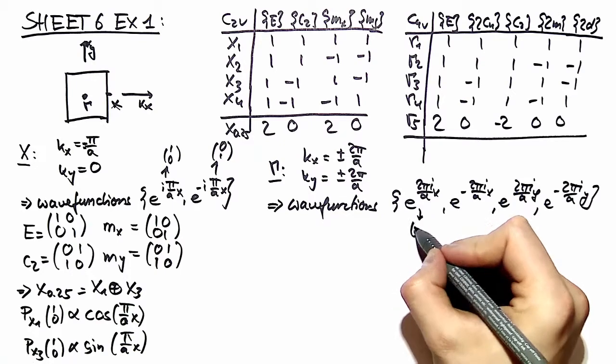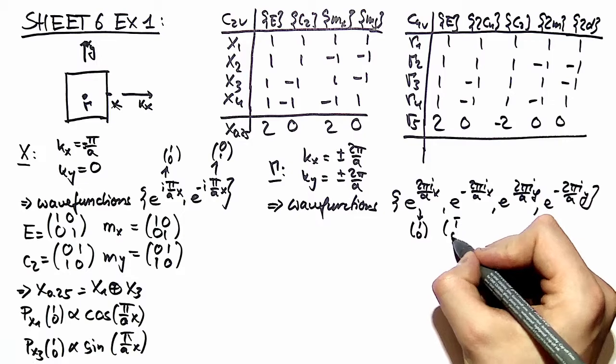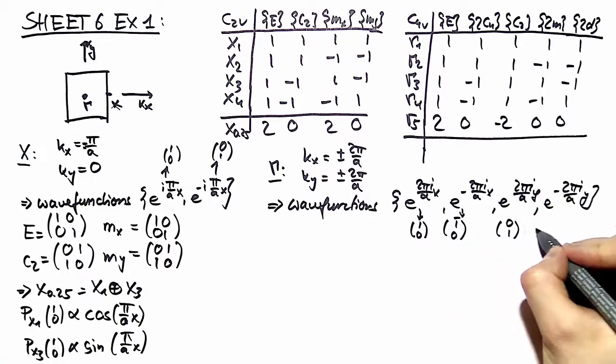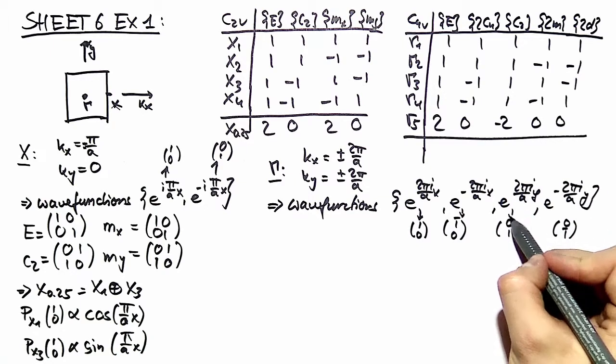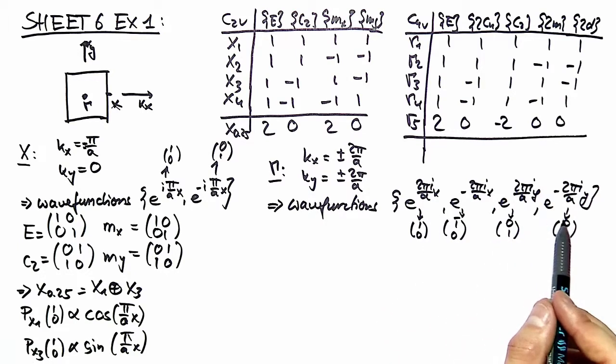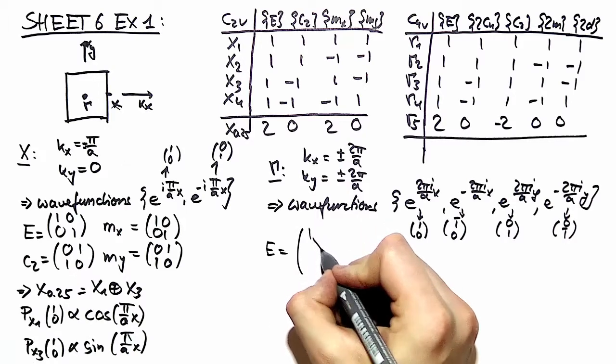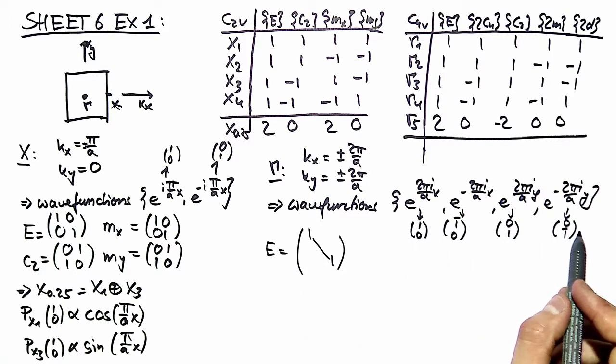We denote this one as (1,0), this one as (1̄,0), this is (0,1), and this is (0,1̄). So we don't write much. Please remember this basis is four-dimensional. Therefore applying the identity element gives us a matrix with only ones on the diagonal, a matrix with only ones on the diagonal, four of them. This notation is for later purposes.